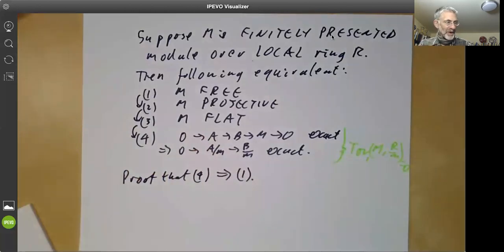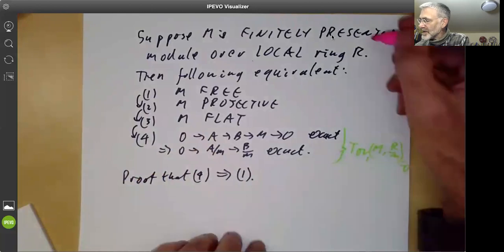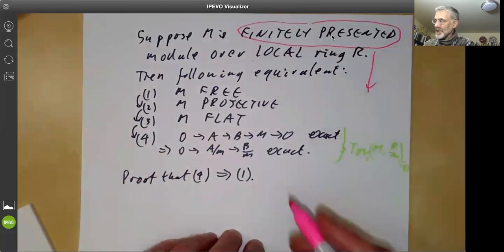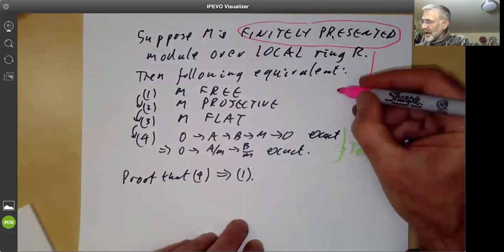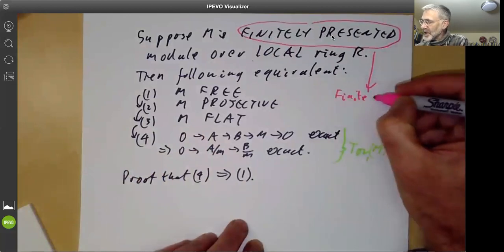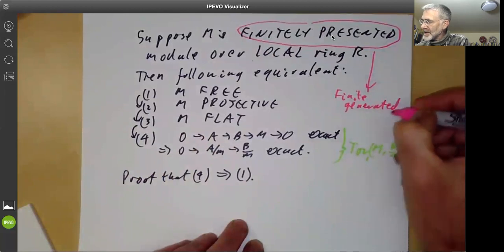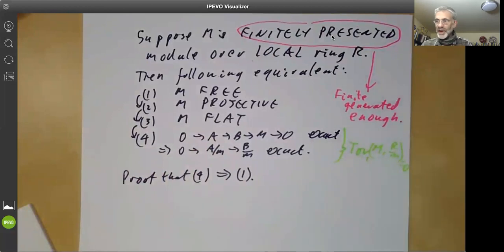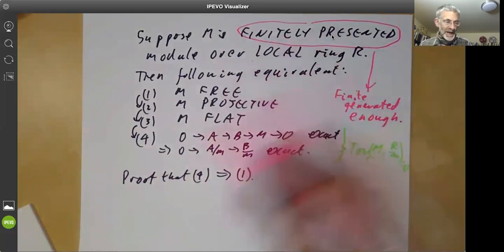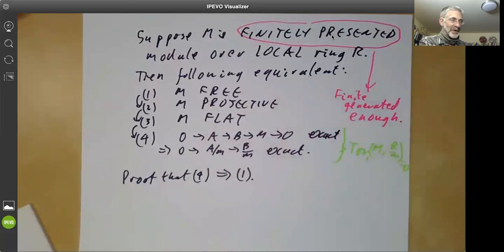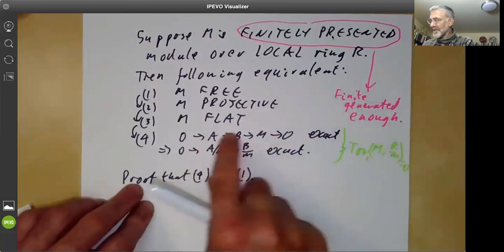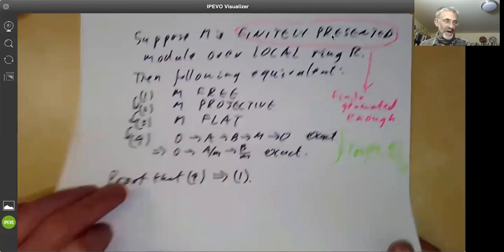And by the way, before going on, I'd better remark that I've said finitely presented here, and you may think that means that finitely generated isn't good enough. In fact, finitely generated is enough, but the proof is somewhat more complicated, so I'm only going to give the proof for finitely presented modules because I don't really care all that much about non-Noetherian rings.